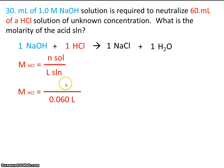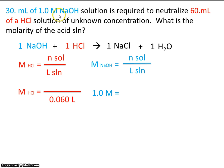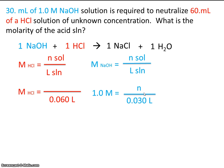Now all we need are the moles of acid that reacted, and we can calculate the molarity. To get moles of acid, that's going to require some additional steps, including some stoichiometry. We're also going to need the molarity equation for the base: moles over liters. We know the base is a one molar solution and we have 30 milliliters of it. Since we know the molarity and the volume, we can solve for moles — which turns out to be 0.030 moles of sodium hydroxide.